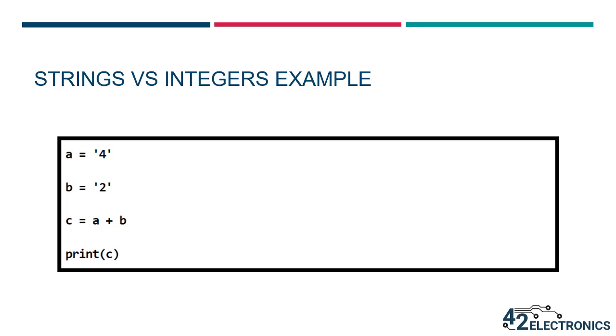What number do you think will be printed to the console as variable c? Here's a hint: it's not 6. 42 will be printed because Python will have added the character '4' to the character '2' resulting in 42.